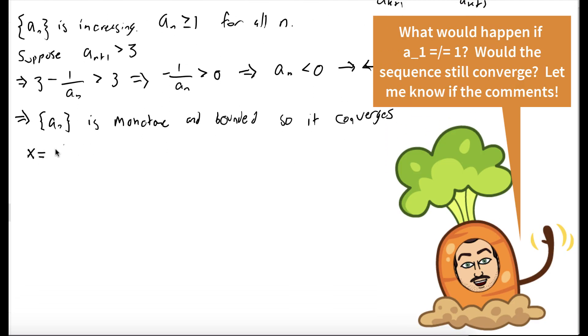So we'll let x be the limit of our sequence, what we converge to. So x is equal to the limit as n goes to infinity of a_n. Well, it's also equal to the limit as n goes to infinity of a_{n+1}. So we can rewrite an equation saying x equals 3 minus 1 over x. And now let's solve for x.